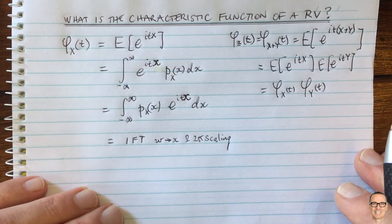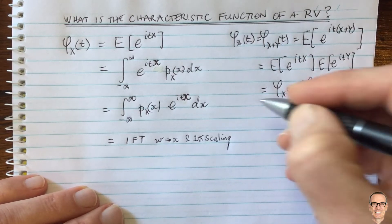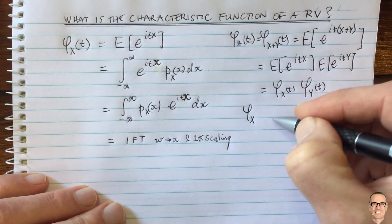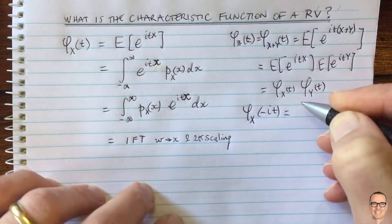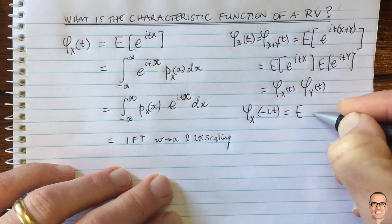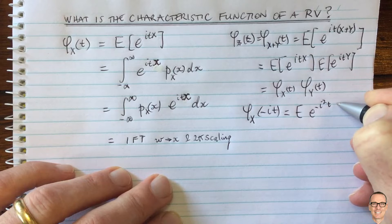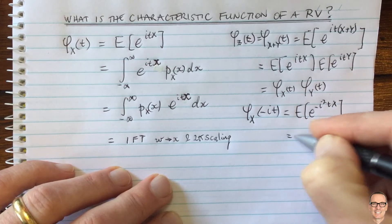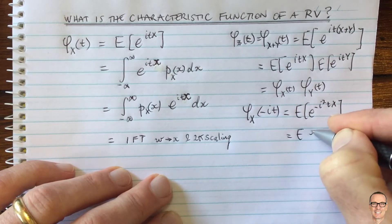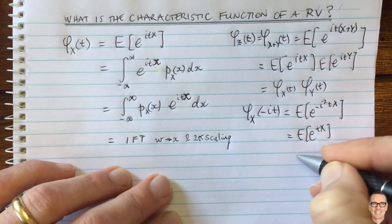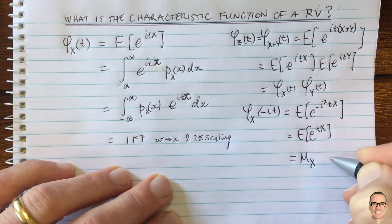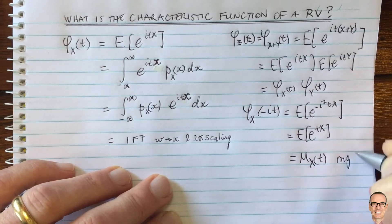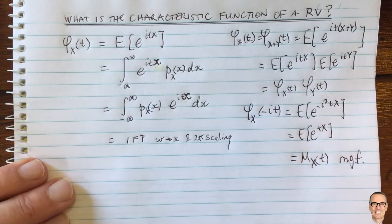One final point: if we replace the parameter t with minus i times t in the characteristic function, then we get the expectation of e to the minus i squared tx. Since i squared equals minus one, this equals e to the tx — and this equals the moment generating function. So the moment generating function is another related function we're familiar with in the study of random variables, and there's a link below this video to that.